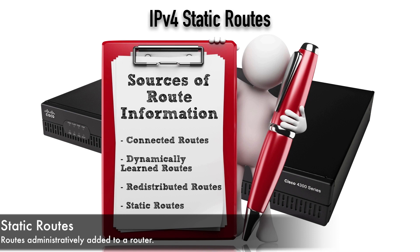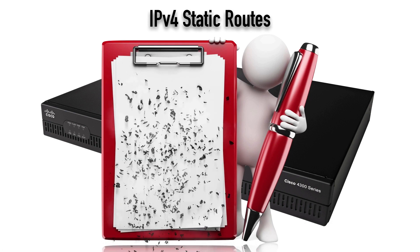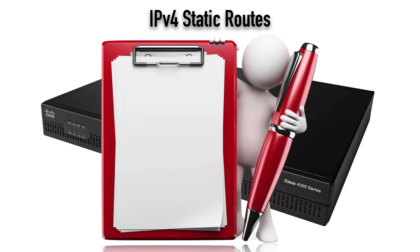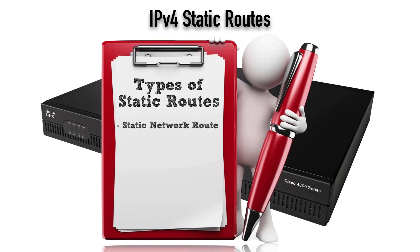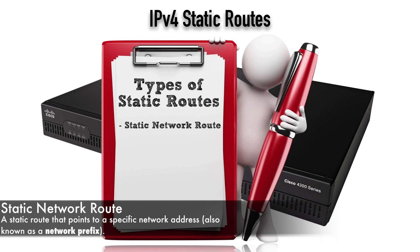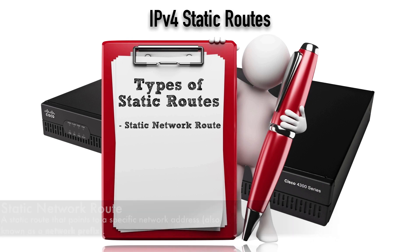Static routes are routes that we as administrators go in and add to the router. We've got a few different types. The first type is a static network route, where we specify how to get to a specific network. We can do that either by sending a packet to a specified next-hop IP address — the IP address of the next-hop router — or we could give the egress interface, the exit interface on this router.